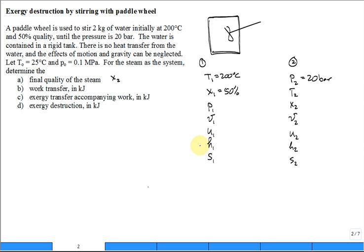And those two up here, T1 and X1 really fix the state. Could I not get P1? How would I get P1? It's equal to P sat at T1. And I can look in the book and I say, okay, the steam table, 200 degrees C, the saturation pressure is 15.5 bar.